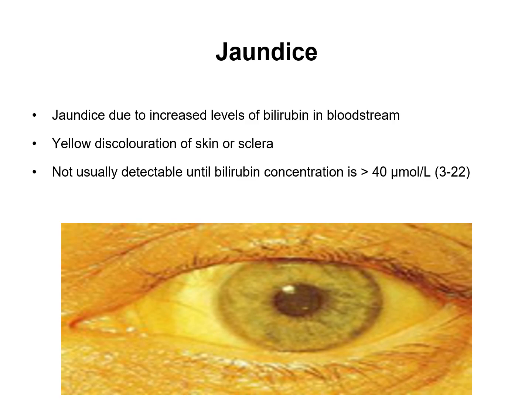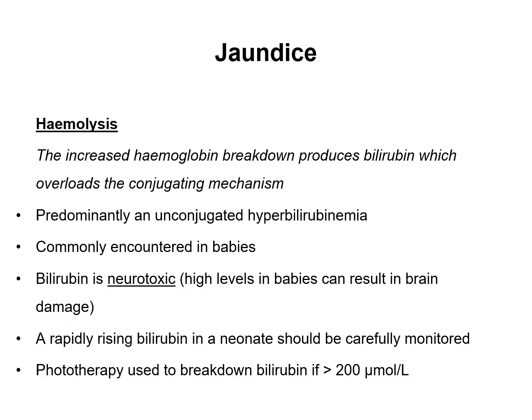Jaundice is a symptom arising due to increased levels of bilirubin in the bloodstream, resulting in yellow discolouration of the skin, eyes, and nails. It is not usually detectable until bilirubin concentration is greater than or equal to 40 micromolar per litre. One cause is haemolysis, where increased haemoglobin breakdown overloads the conjugating mechanism. This is commonly encountered in babies, where high levels are neurotoxic and can cause brain damage. Levels in neonates should be carefully monitored, and phototherapy is used to break down bilirubin if it exceeds 200 micromolar per litre.